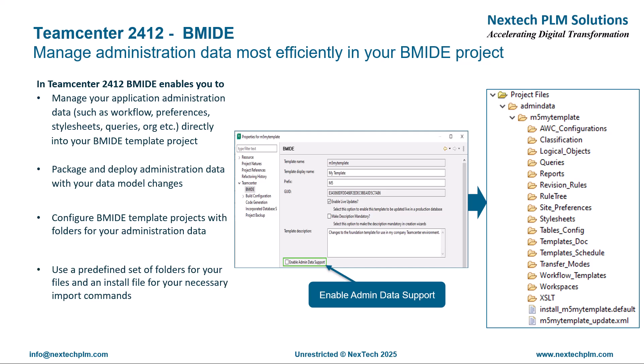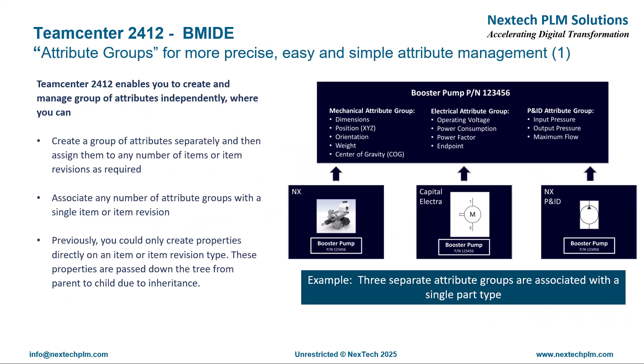To start managing administration data in BMIDE, you simply enable the admin data support checkbox. BMIDE has also been enhanced to support attribute groups for more precise, easy, and simple attribute management. Attribute groups allow you to create properties with more precision, where you can create and manage a group of properties separately and then assign them to items or item revisions. This overcomes the limitation of older releases, where you could only create properties directly on an item or item revision type.